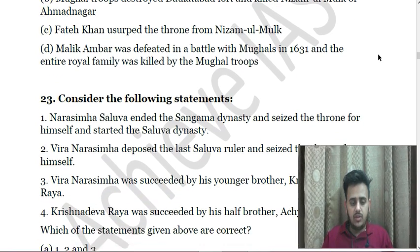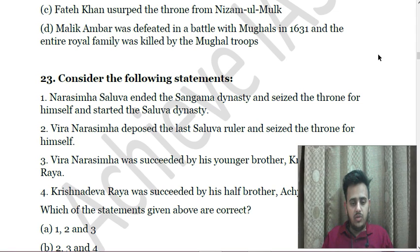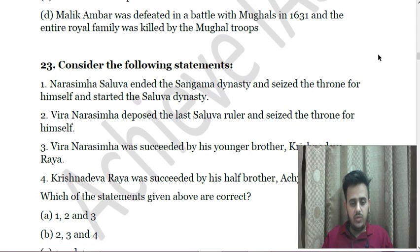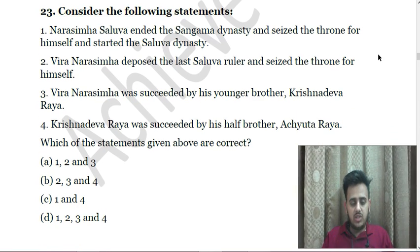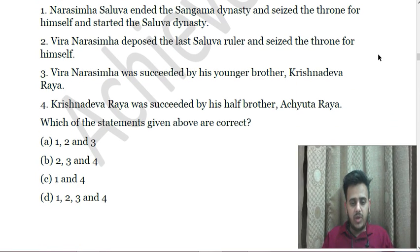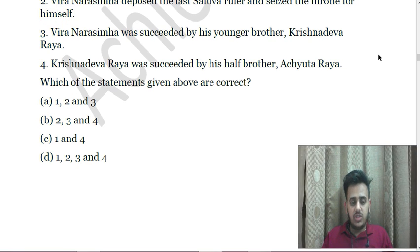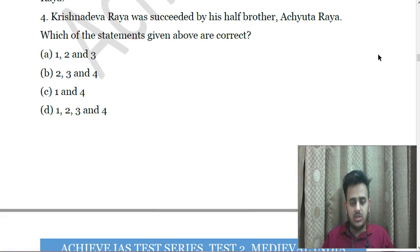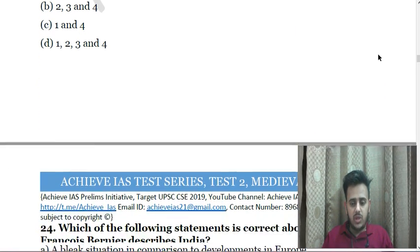Next: Consider the following statements — First, Narsimha Saluva ended the Sangama dynasty and seized the throne for himself, starting the Saluva dynasty. Second, Veera Narsimha deposed the last Saluva ruler and seized the throne for himself. Third, Veera Narsimha was succeeded by his brother Krishnadeva Raya. Fourth, Krishnadeva Raya was succeeded by his half-brother Achyuta Raya.